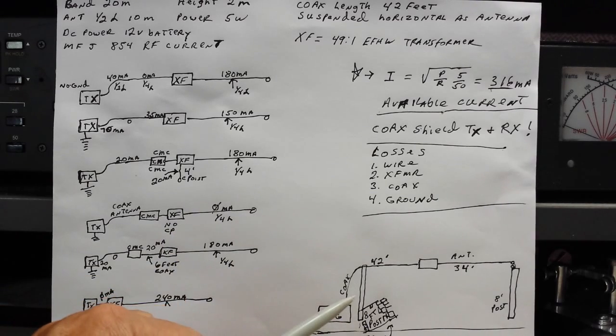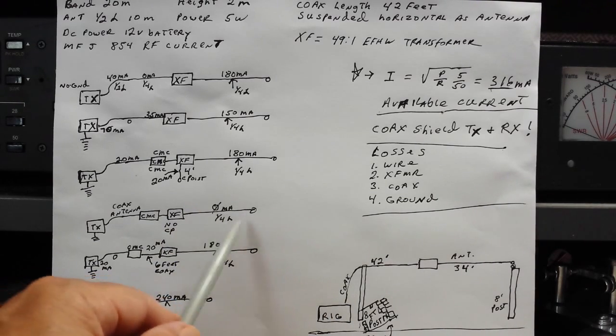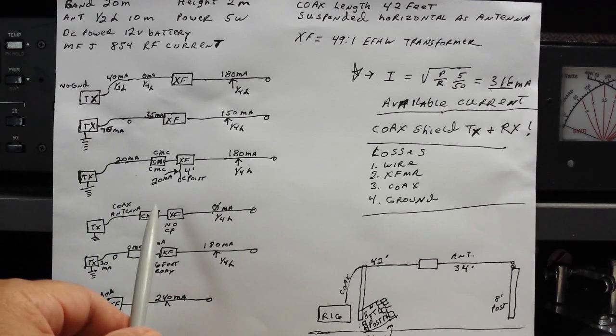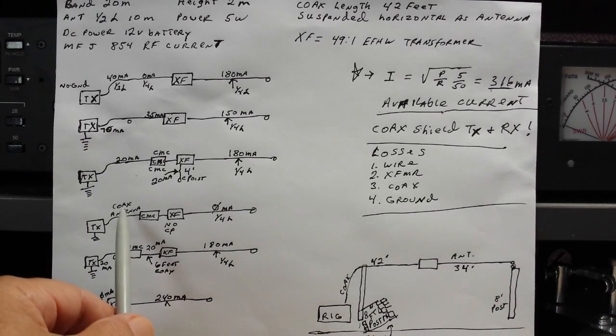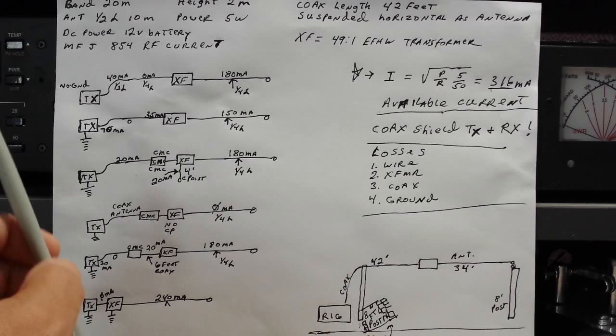That totally killed the antenna. Now there's no antenna current. And guess where all the current is? It's going to be right here. The SWR that we measured at the transmitter was still one-to-one and everything looked very nice.